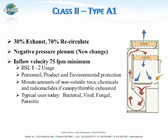Moving on from Class I, we get into the first portion of Class II cabinets: the Class II Type A1 biological safety cabinet. This cabinet functions with 30% of the airflow exhausted either back into the laboratory space or connected to the exhaust system, and 70% of the airflow is recirculated within the cabinet through HEPA filtration. The airflow velocity on the Class II Type A1 is 75 feet per minute, and the BSL level usage for an A1 cabinet is either BSL level 1 or 2.